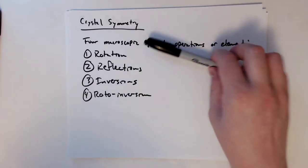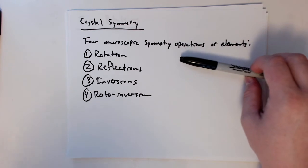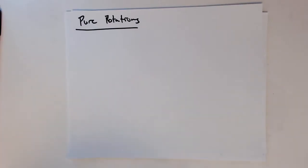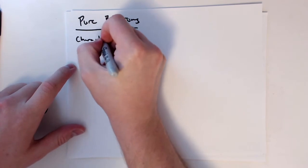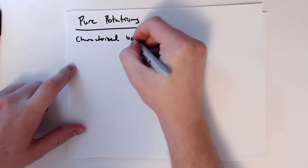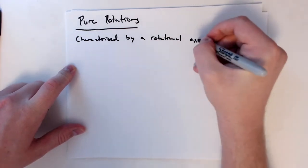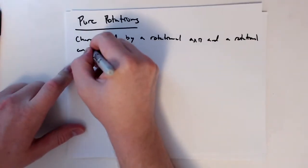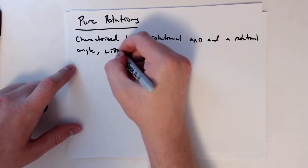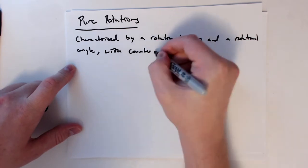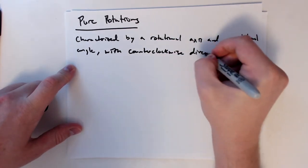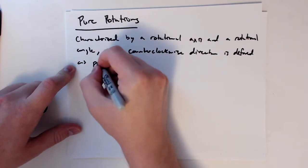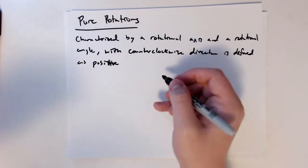In this module, we're going to start talking about the different forms of macroscopic symmetry operations, and we're going to start with the first, which is rotation or pure rotations. These are characterized by a rotational axis and a rotational angle. The convention is that the counterclockwise direction is defined as positive.